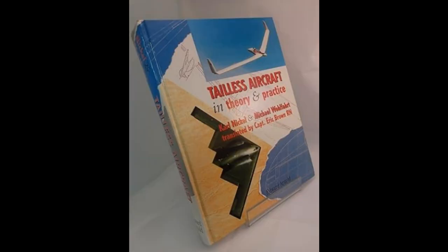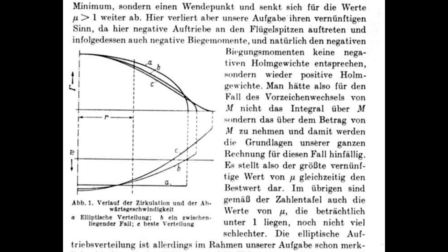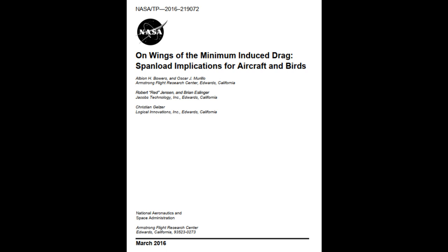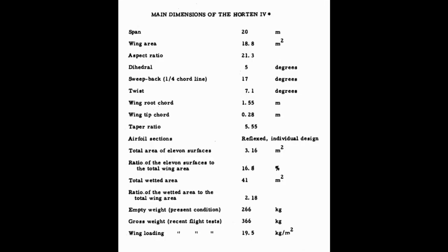I wanted to simulate the Horton 4 flight discussed in the book by Nickel and Wolfhard, to address the claims made that the bell-shaped lift distribution is unsuitable for flying wing aircraft. We know the NASA Prandtl-D aircraft stands in contrast with this claim. I also wanted a general discussion about what a tailless aircraft needs to be like a world-class glider competitive in the world gliding championship — obviously with respect to performance, leaving handling quality aside for now.